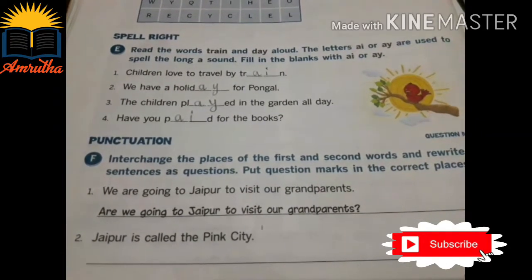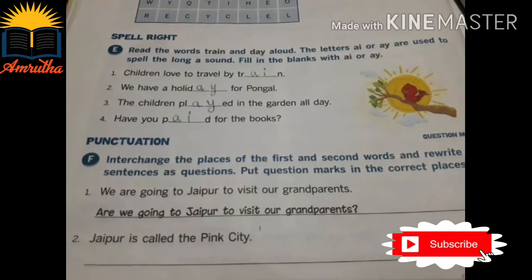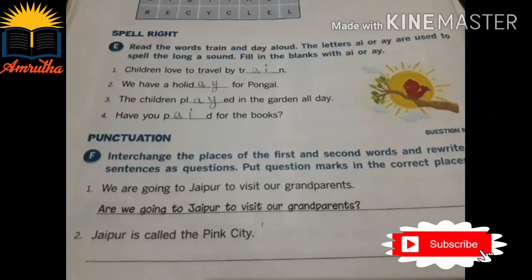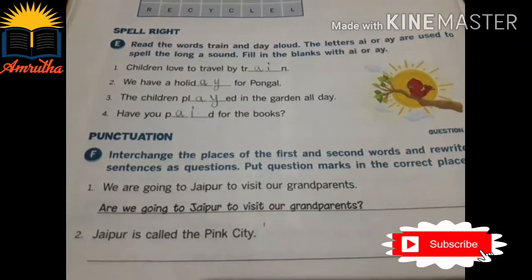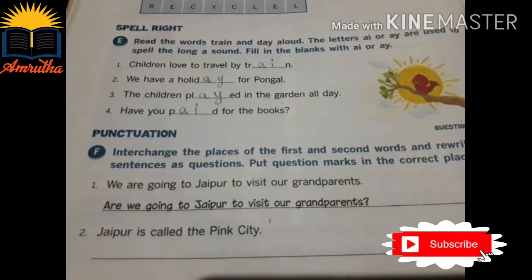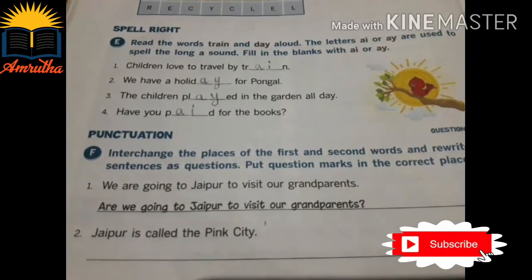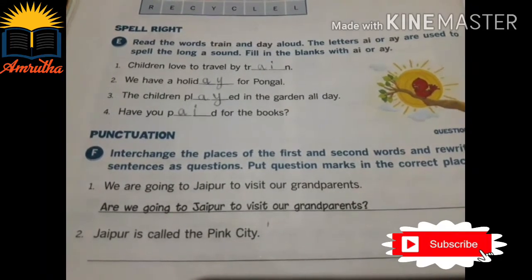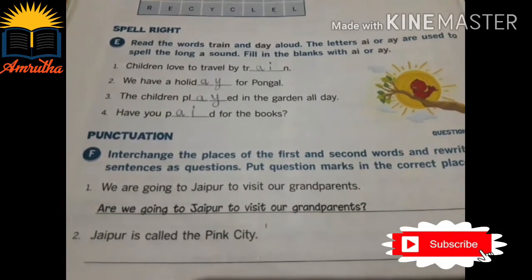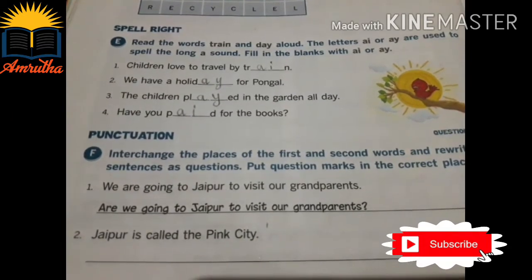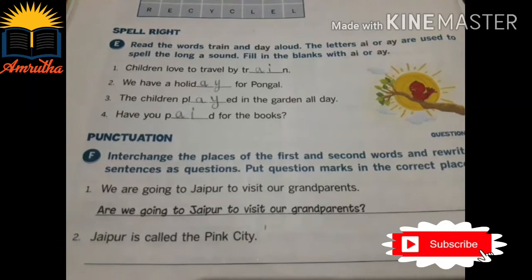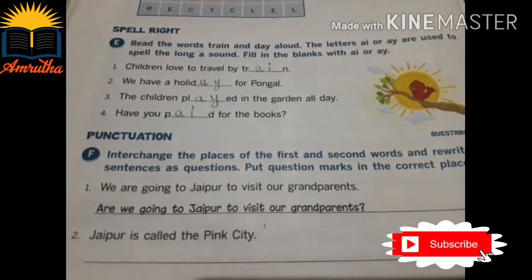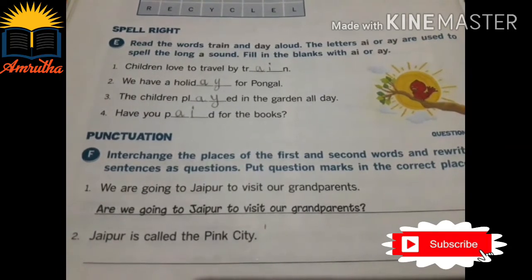First one — we are going to Jaipur to visit our grandparents. From this sentence, we interchange the first word 'we' and second word 'are'. Then it becomes: are we going to Jaipur to visit our grandparents? By changing the places of the first and second words, it became a question.